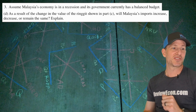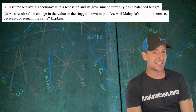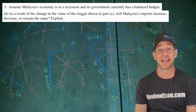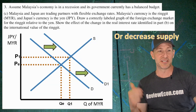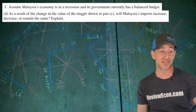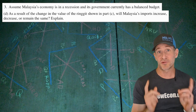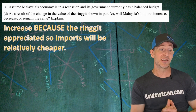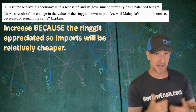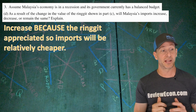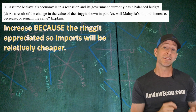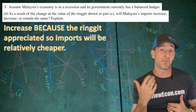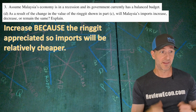For part D, as a result of the change in the value of the ringgit shown in part C, will Malaysia's imports increase, decrease, or remain the same? We just saw an increase in the exchange rate, meaning the ringgit appreciated — it's more valuable than before. Imports are going to increase because the ringgit appreciated, making imports relatively cheaper. It will take fewer ringgits to buy foreign-made goods than it did before.